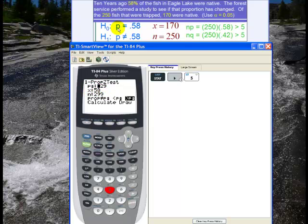P naught, that comes from the null hypothesis, P equals 0.58. So 0.58.